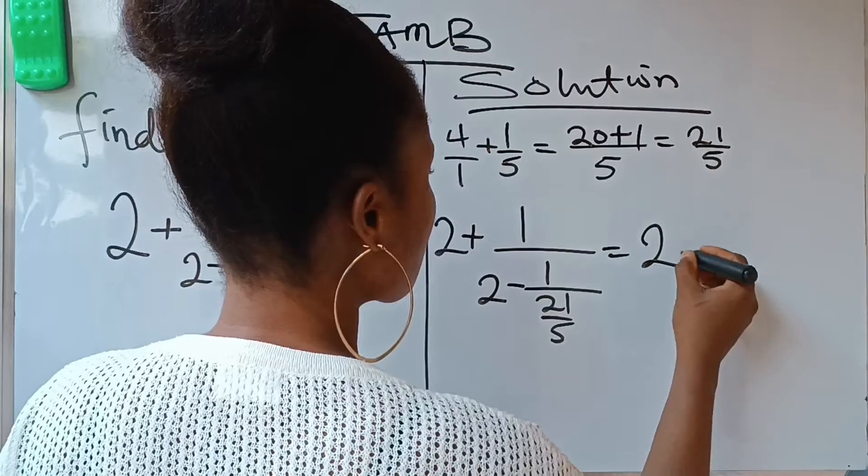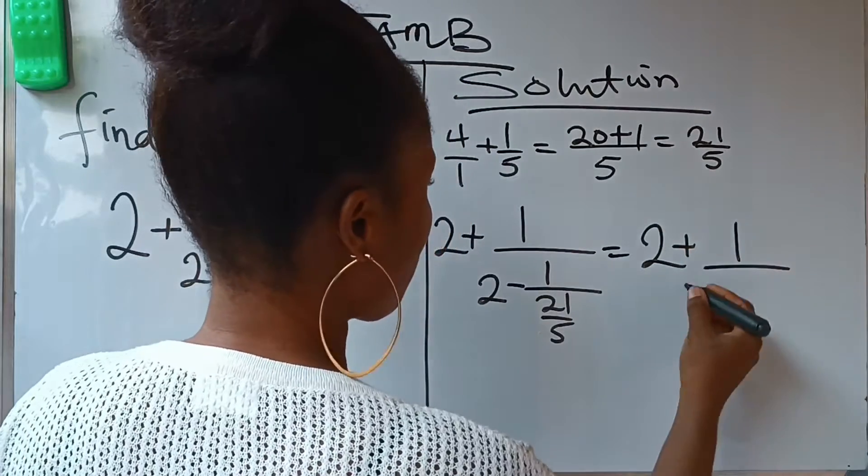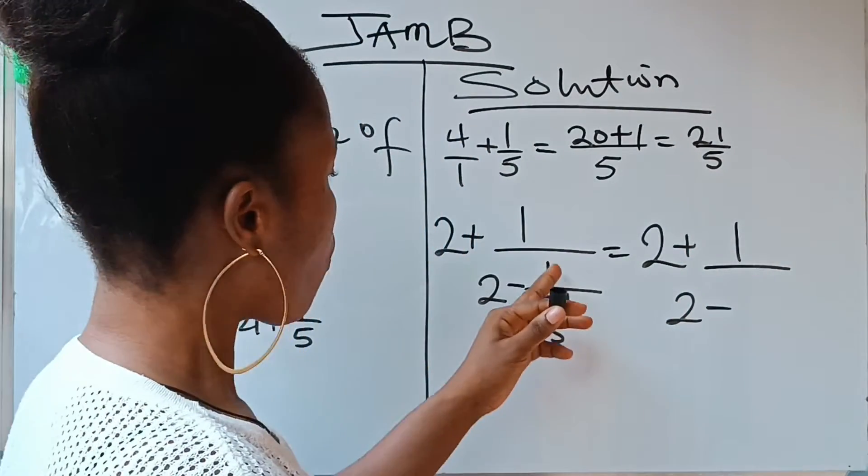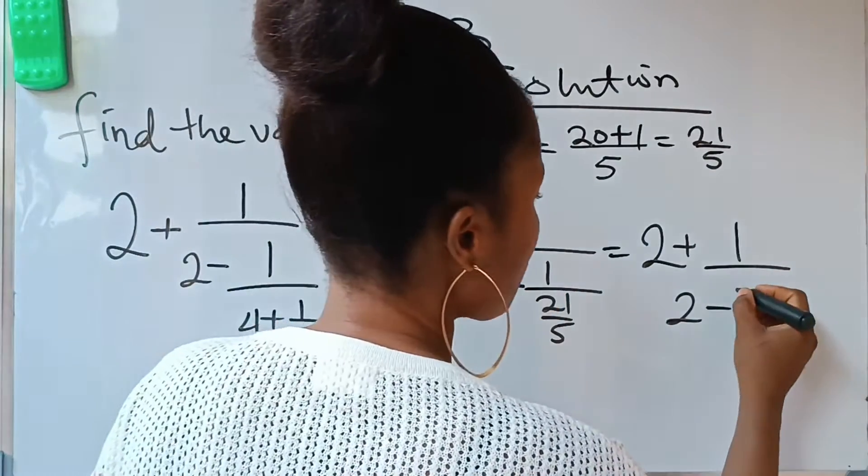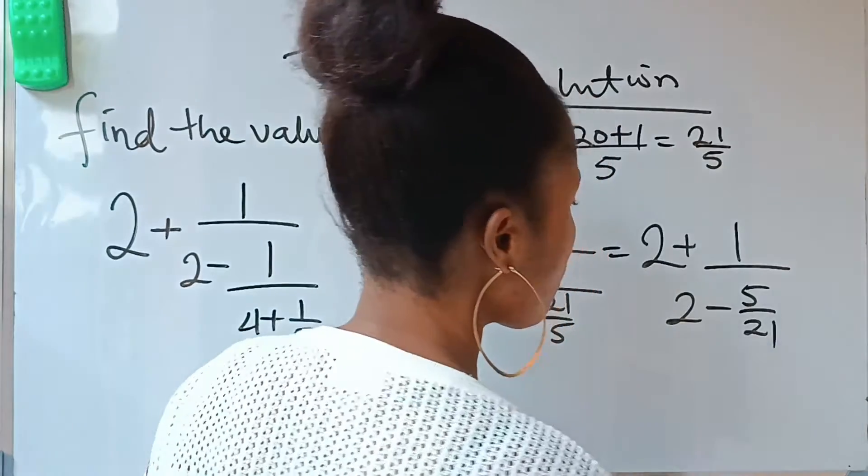Which is going to give us 2 plus 1 over 2 minus, the inverse of 21 over 5 means 5 over 21. So you are going to have 5 over 21. You notice that we have another fraction to solve here.